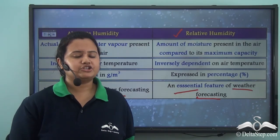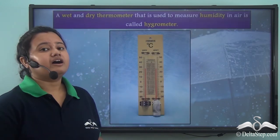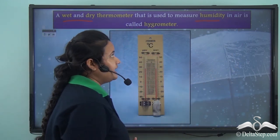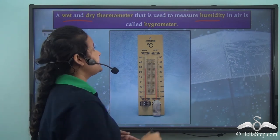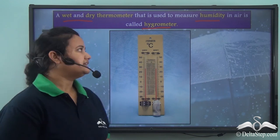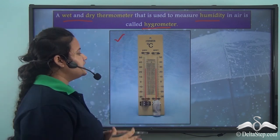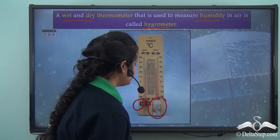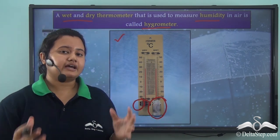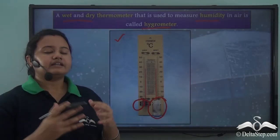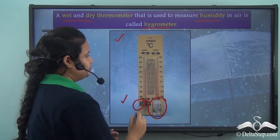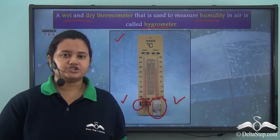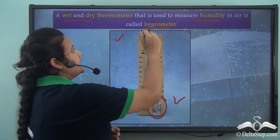How do we measure humidity? A dry and wet bulb thermometer is used to measure humidity in air, and this instrument is called a hygrometer. A hygrometer has a dry bulb and a wet bulb that measure air temperature. The difference between the values of the dry and wet thermometers gives the humidity of air.